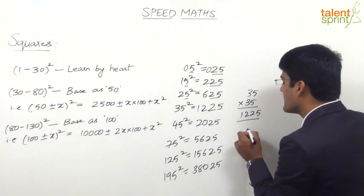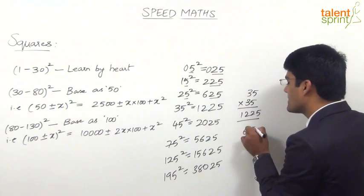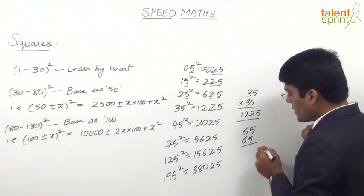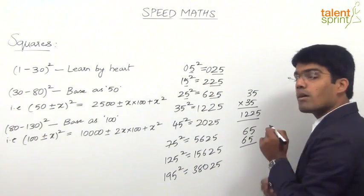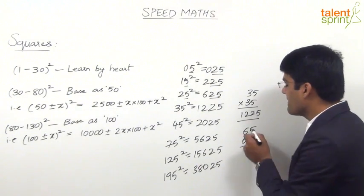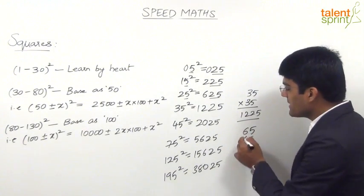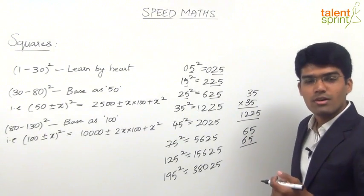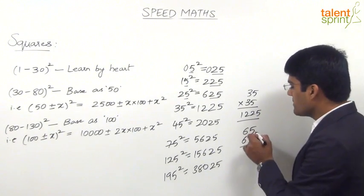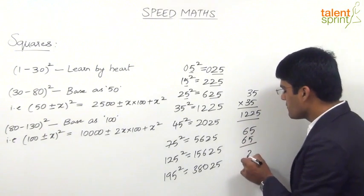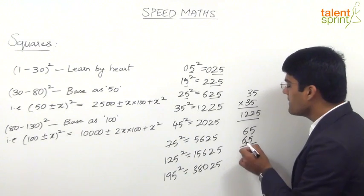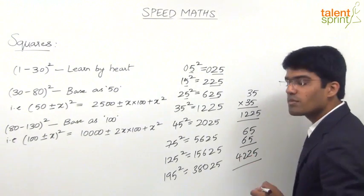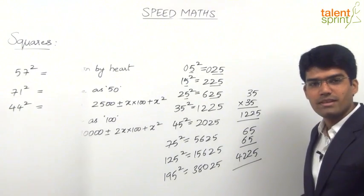Likewise, 65 squared is 65 into 65. Again, these are complementary numbers: 5 plus 5 is 10, and the tens digits are equal (both 6). The answer is obtained as 5 into 5 = 25, and 6 into the next digit 7 = 42. So 65 squared is 4,225.